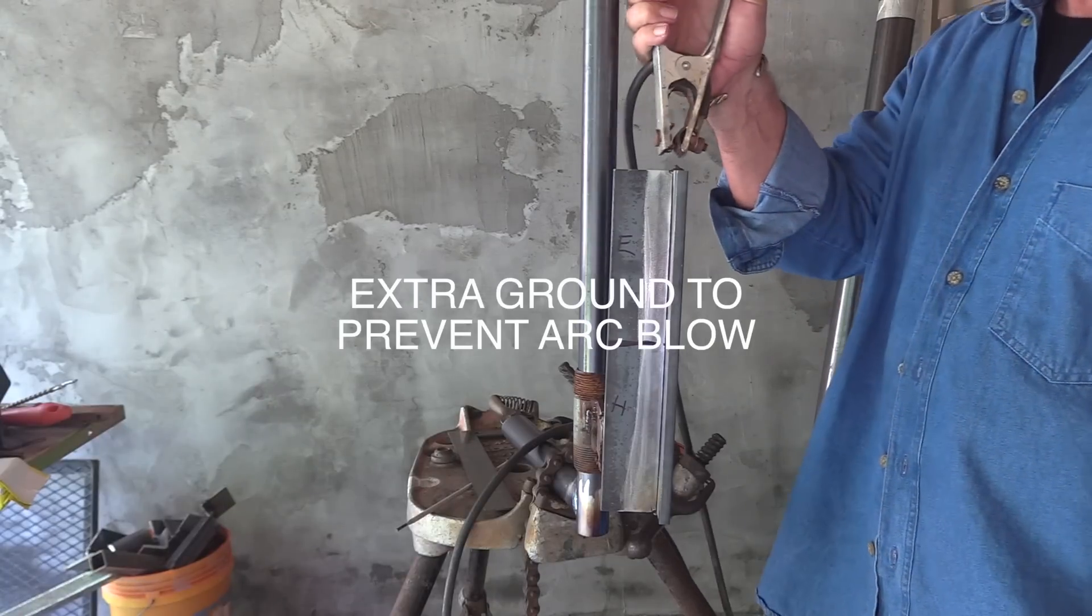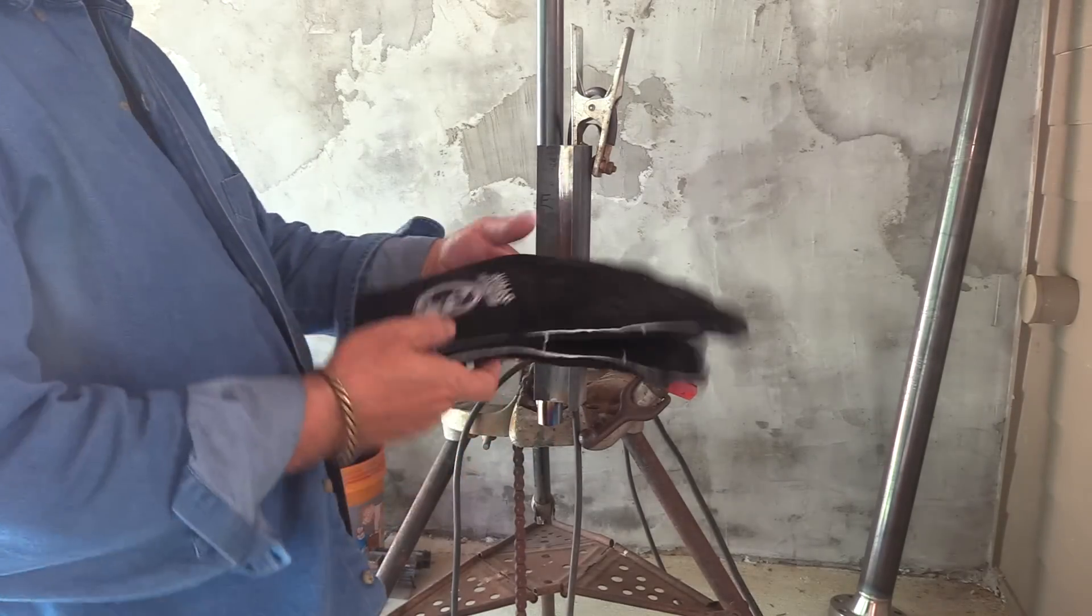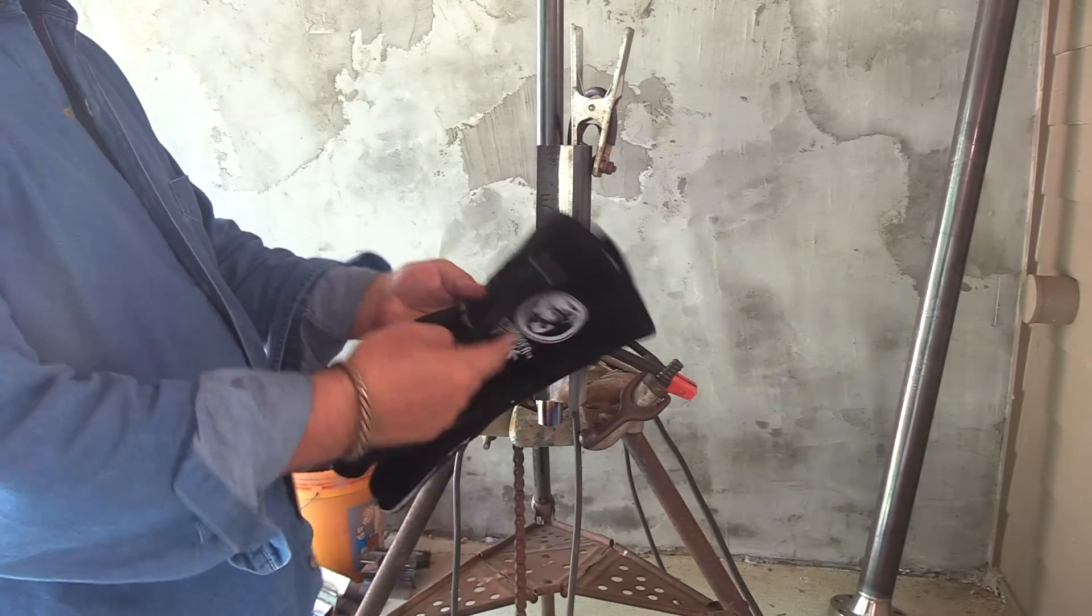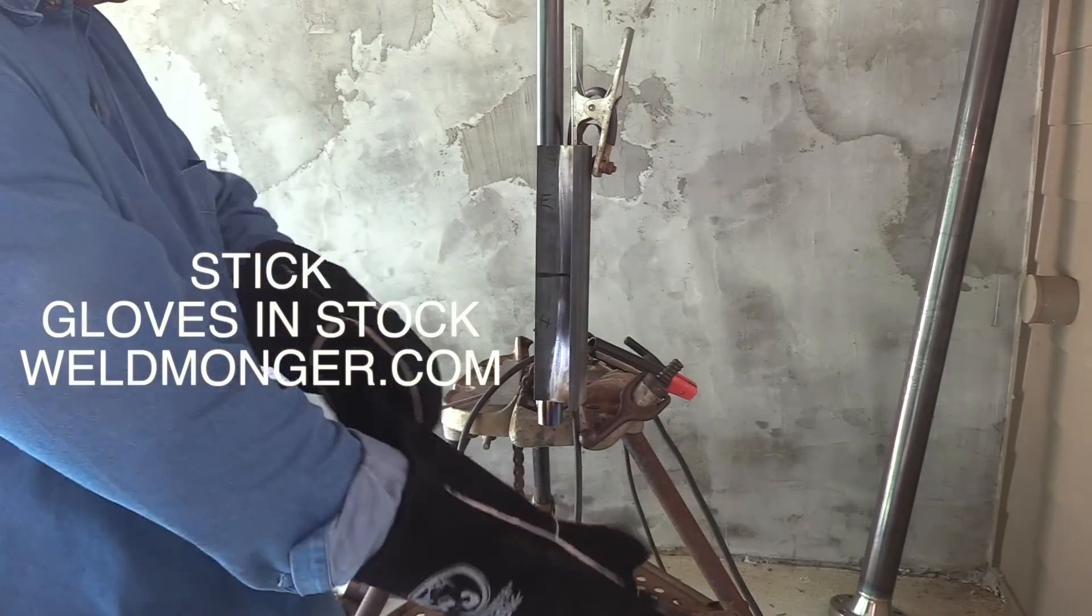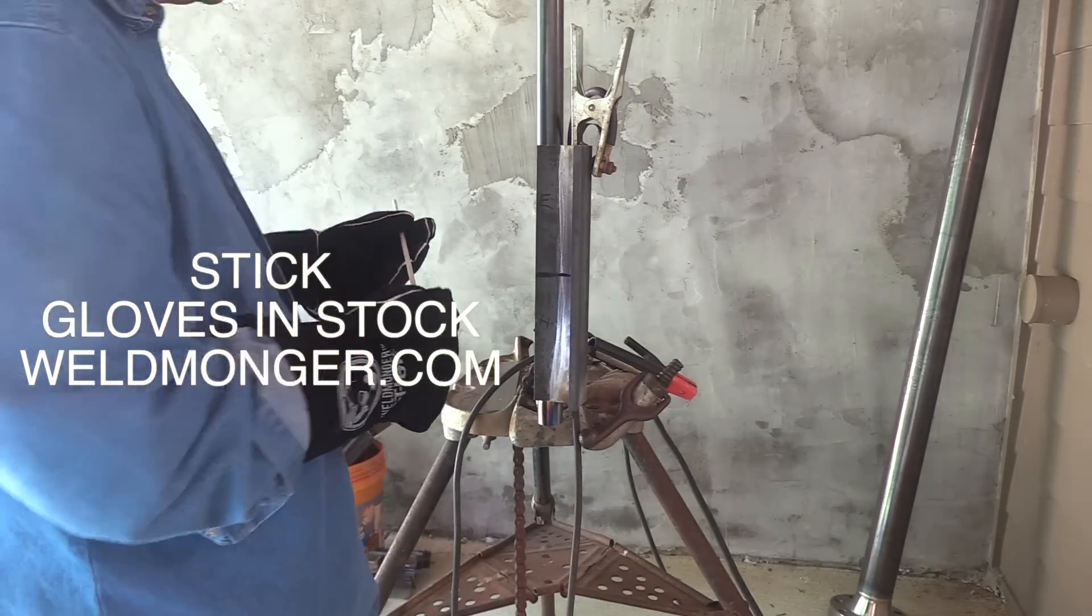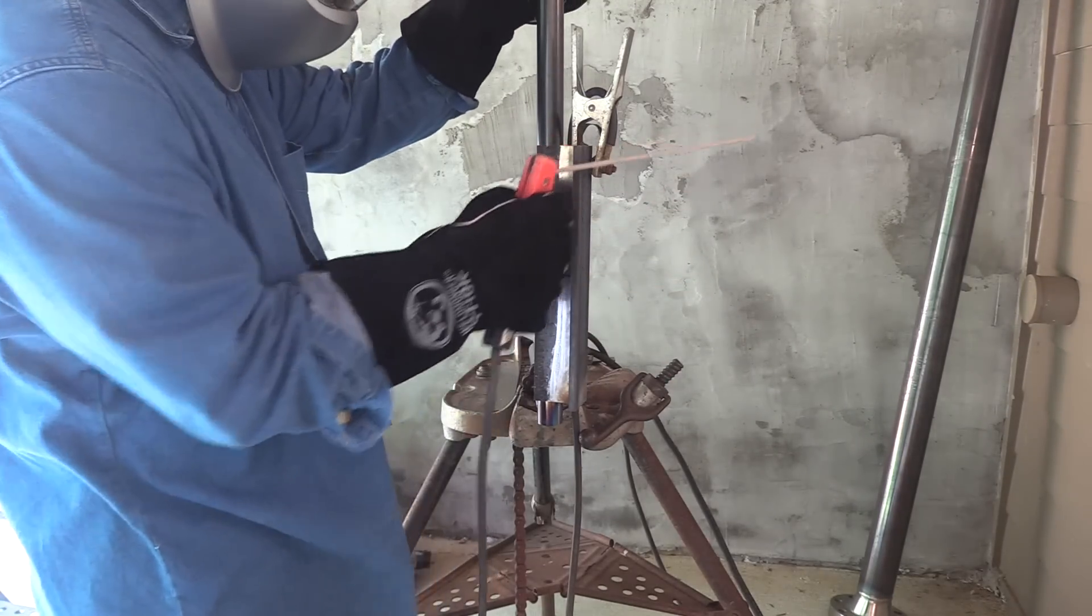And I'm also going to put a ground in addition to the ground I have toward the bottom. I'm going to put a ground on the top here like a jumper cable. I find that that really helps a lot in preventing arc blow. Sometimes you get it no matter what, but I've found that having that extra ground there, so you have a ground at the beginning and a ground at the end, it just seems to help a lot.